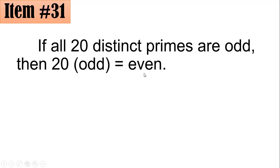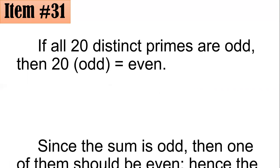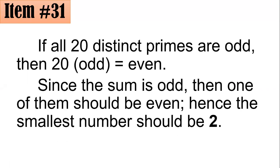So therefore, since it's impossible, in this case the answer is looking for odd. Therefore, since the sum that we're looking for is odd, then one of them should be even. Hence, the smallest number should be 2. That is letter A.